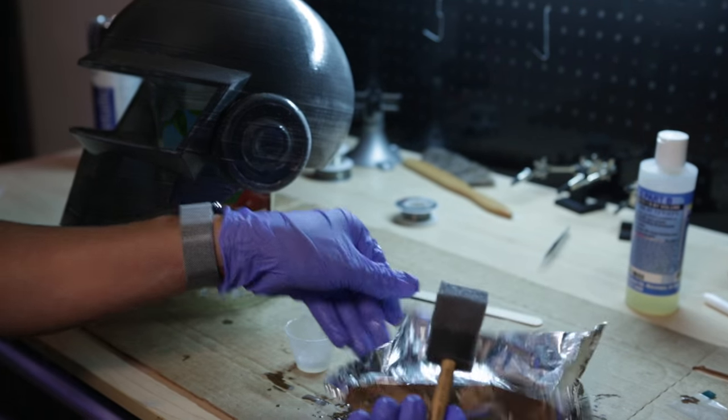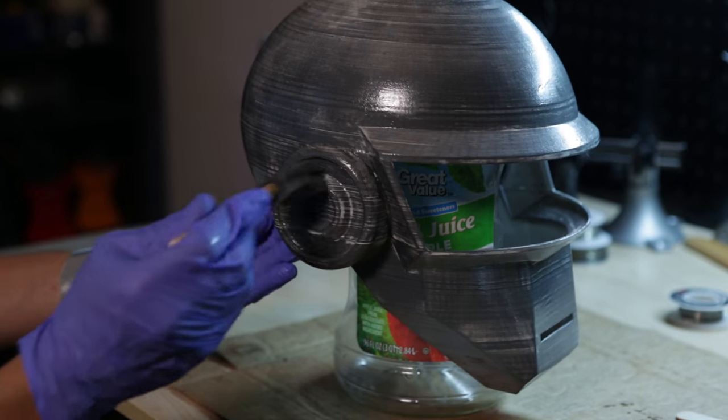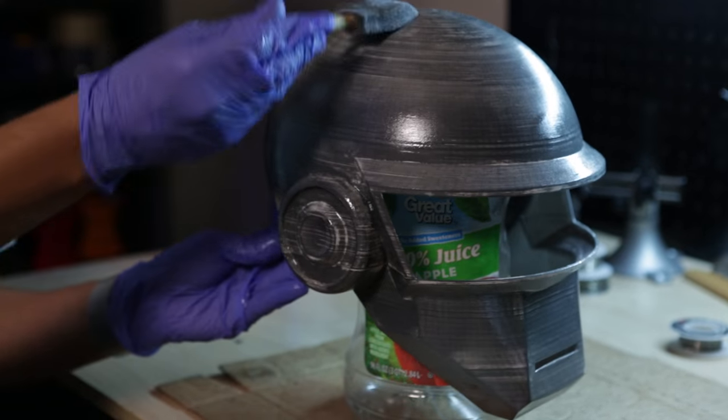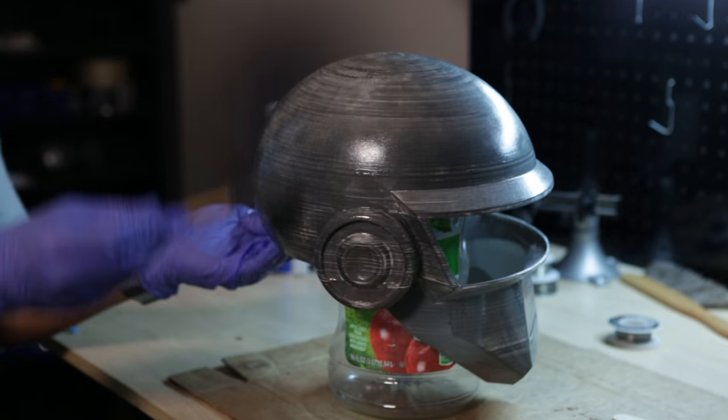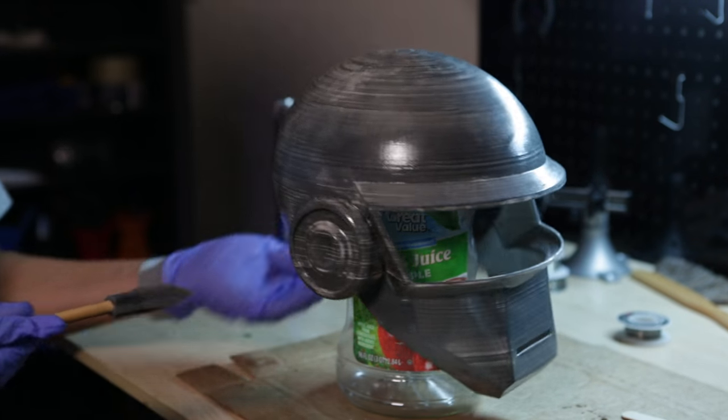Now for best application we recommend using a foam brush. This is going to help avoid those unwanted strokes from a chip brush. We're going to apply an even amount of coating to the helmet and make sure to get all of the crevices.